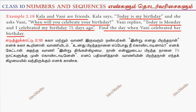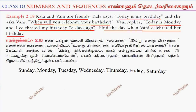7 days of the week listed from Sunday to Saturday. Sunday is 0, Monday is 1, Tuesday is 2, Wednesday is 3, Thursday is 4, Friday is 5, Saturday is 6.